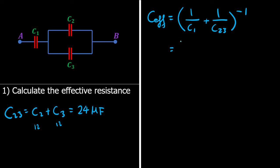So what we have is 1 over 12 microfarads plus 1 over 24 microfarads, and then inverse that. And what we will get is 8 microfarads as its effective capacitance.